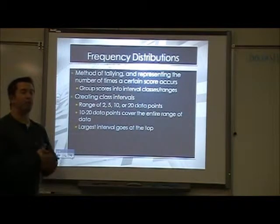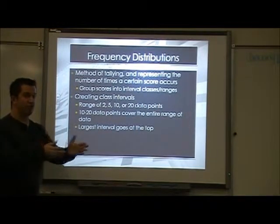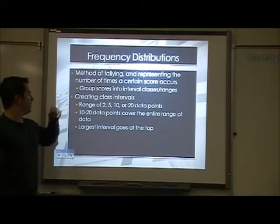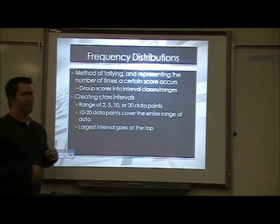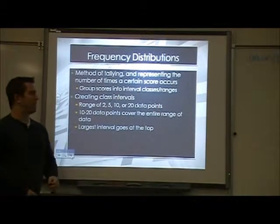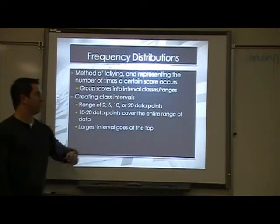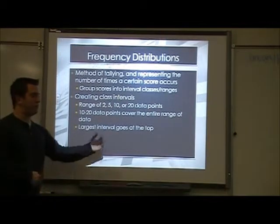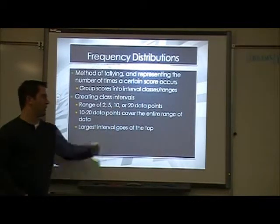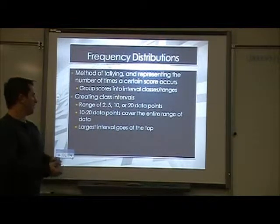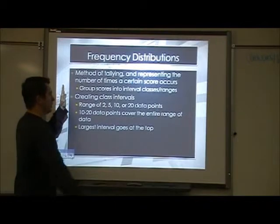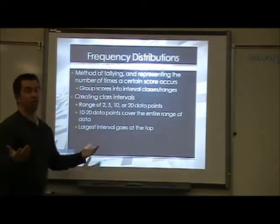Your frequency distribution is an important part of creating a good chart. We want to know how to distribute the data and how spread out things need to be. We need to set an interval. Our interval is based on how big our data set is. A rule of thumb I use is 2, 5, 10, or 20 data points to determine how big my interval is. If I have a lot of data points spread out from zero to 100, I'm probably going to use a bigger interval like 20. The largest interval always goes on top.